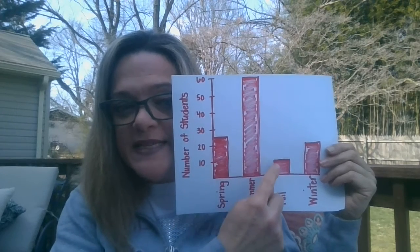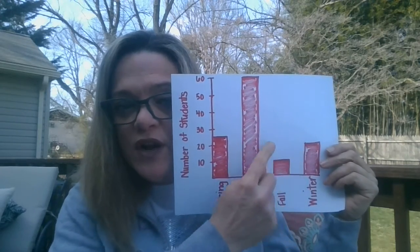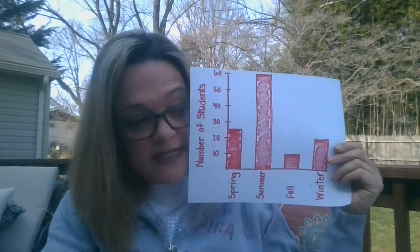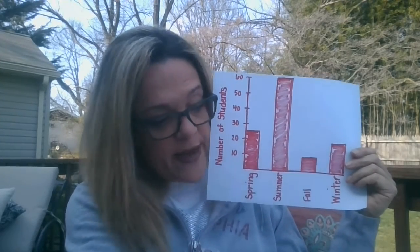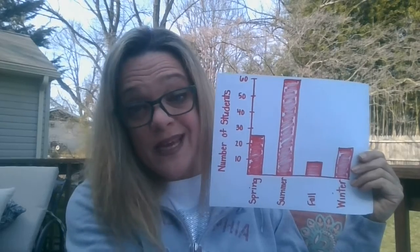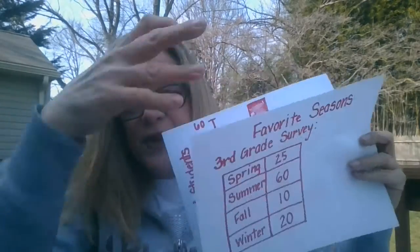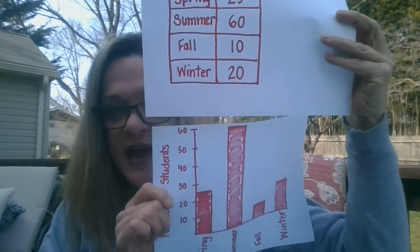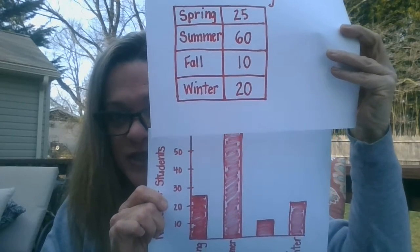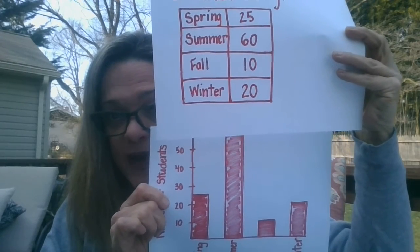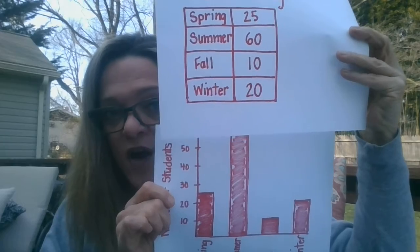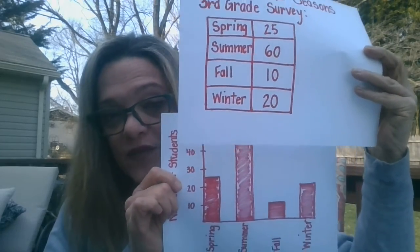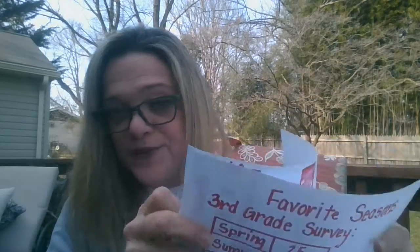For fall, I made sure I made 10. And for winter, my line falls at 20. So the same information that I got from my survey, I took and added the exact same information to my graph. Take a minute, make your graph, and when you're ready, come back for my questions.